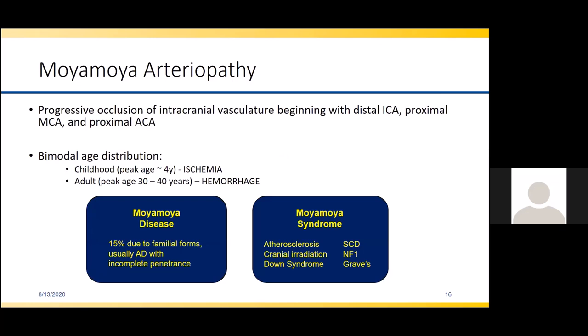Another common cause of arteriopathy in children is moya-moya arteriopathy. Moya-moya means "puff of smoke" in Japanese, describing the classic angiographic finding. Moya-moya arteriopathy is a progressive spontaneous occlusion of the intracranial vasculature at the level of the circle of Willis, typically beginning with the distal internal carotid and proximal middle cerebral and anterior cerebral arteries. There is a bimodal age distribution with a childhood peak at about four years of age, where children often present with ischemic symptoms and ischemic stroke, while adults tend to present in their 30s or 40s, typically with hemorrhage.